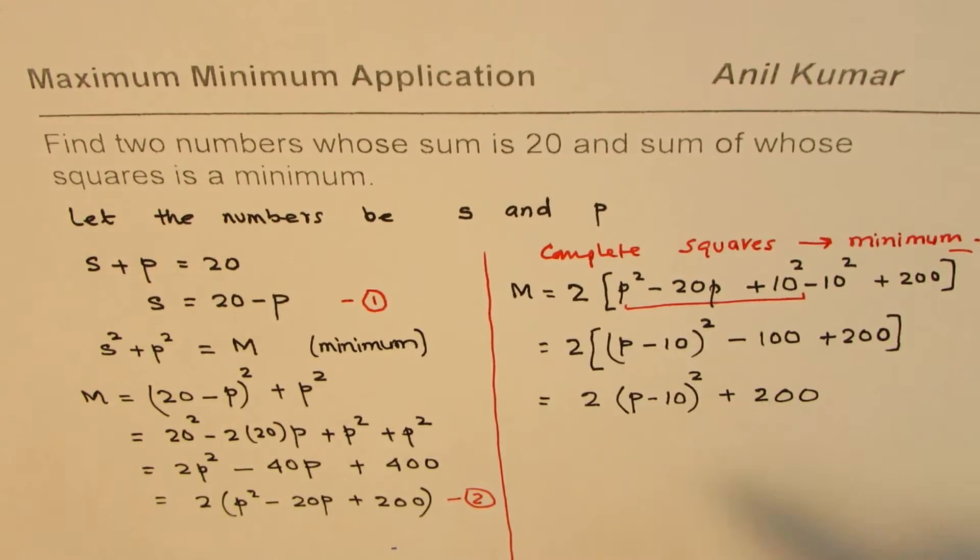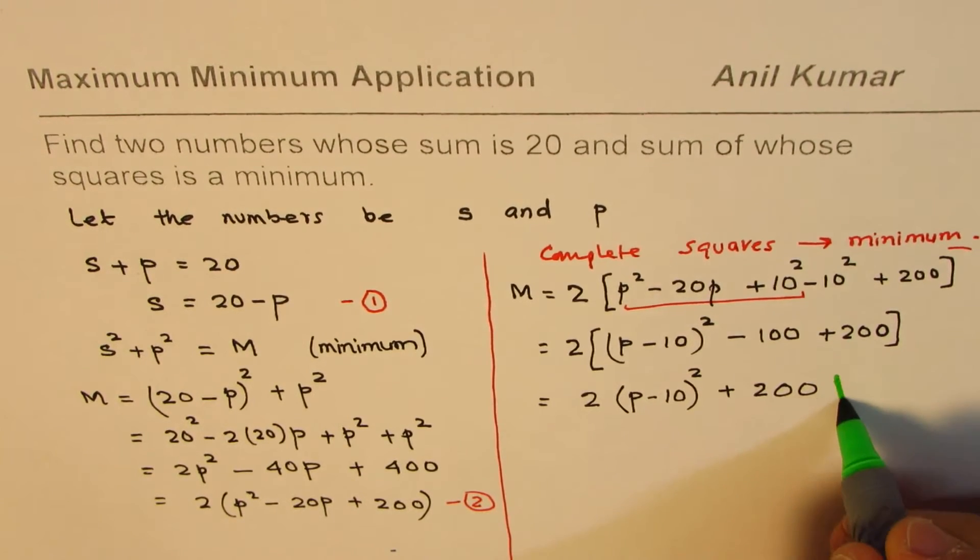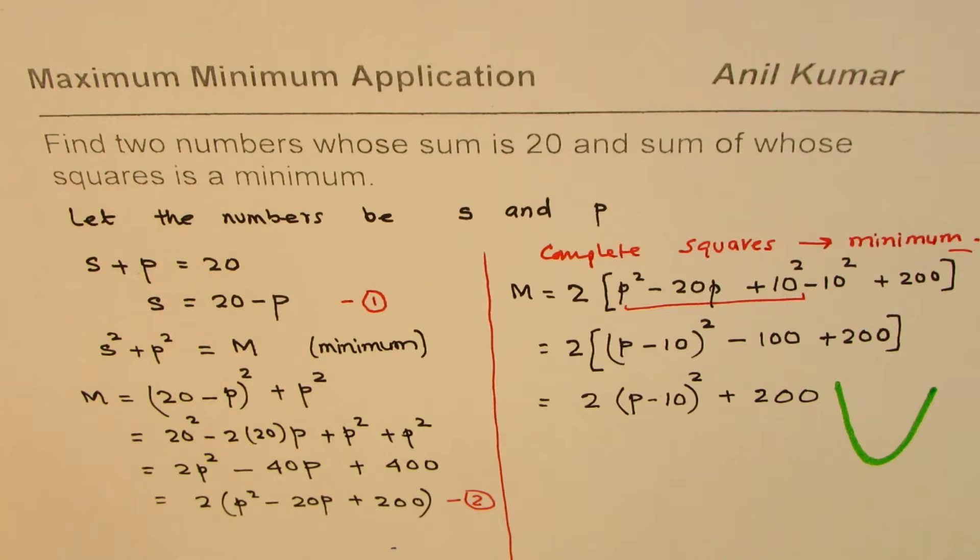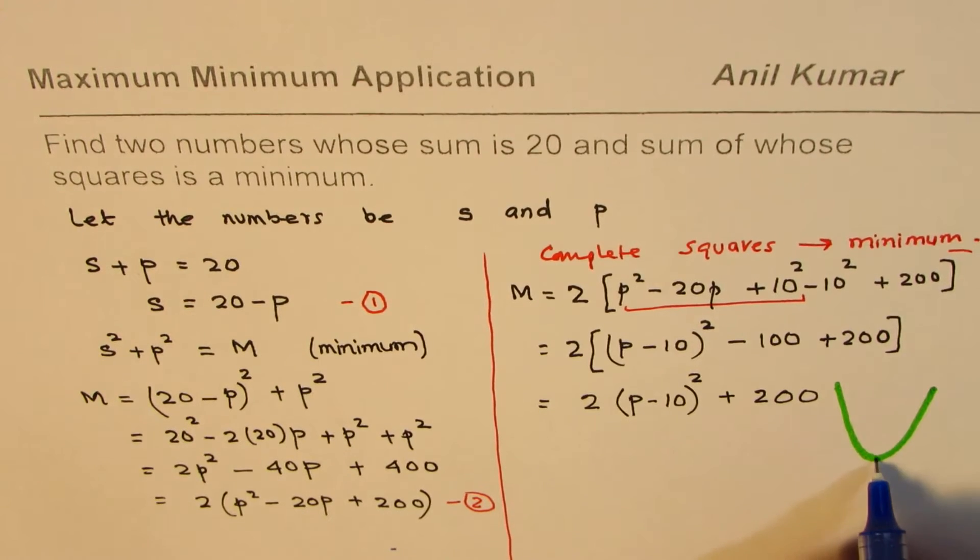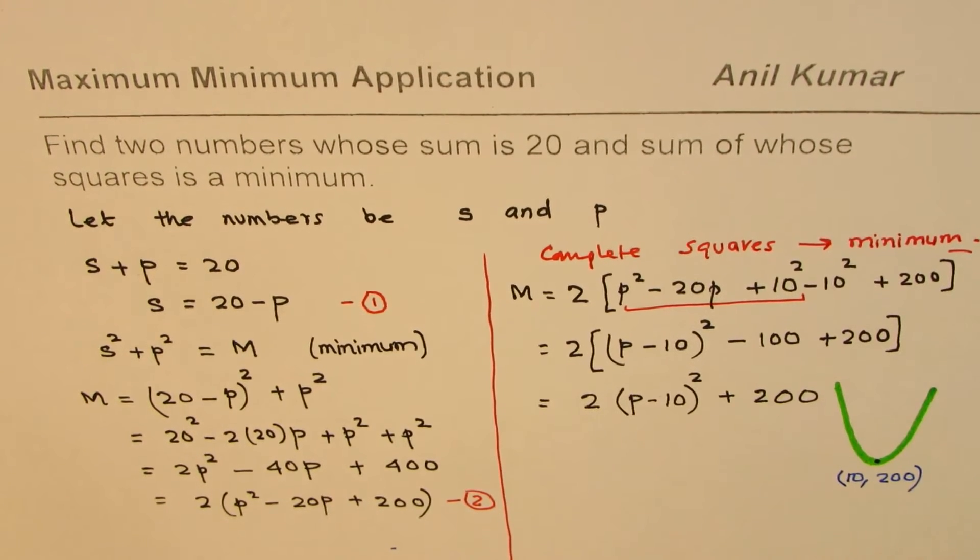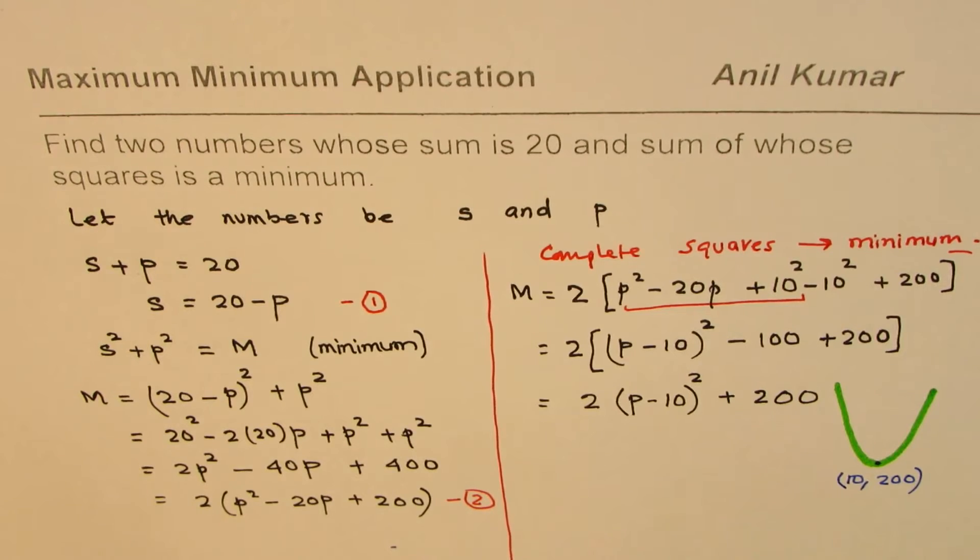This parabola opens upwards kind of like this, whose vertex gives us the minimum. This vertex, the turning point, is at 10 and the minimum value is 200.